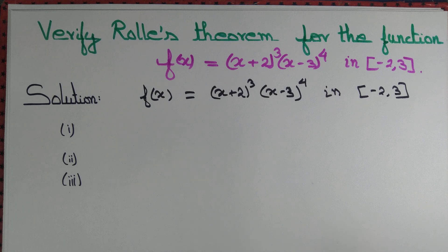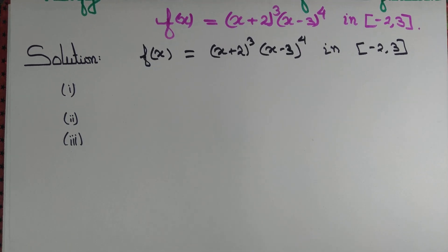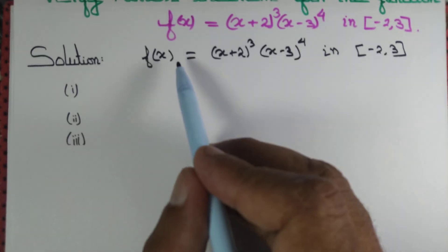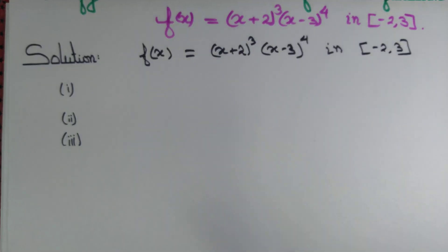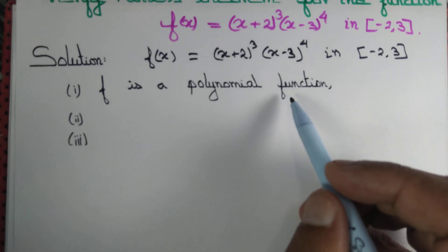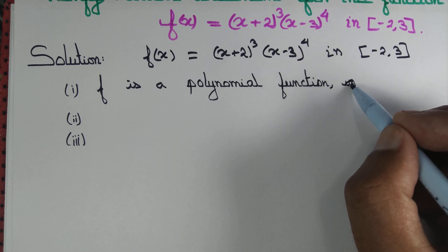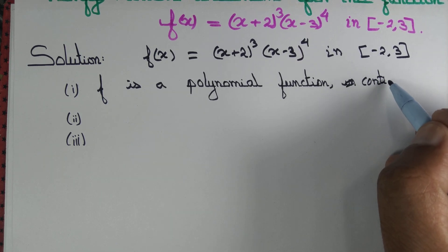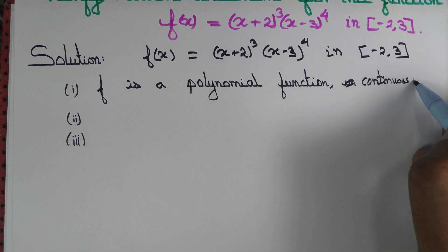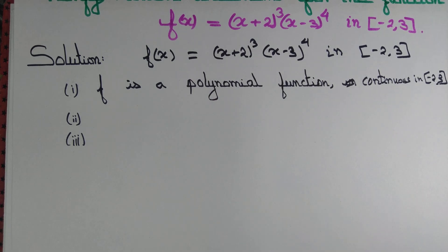To verify Rolle's theorem, we need to make sure three criteria are satisfied. The first one is that f is continuous. This is a polynomial function, and polynomial functions are always continuous throughout ℝ — so f is continuous on [−2, 3].